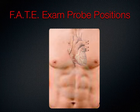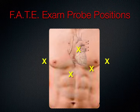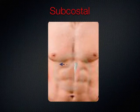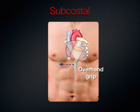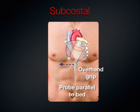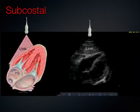The probe positions include the sub-xiphoid location, the apex of the heart, over the great vessels, and the pleura bilaterally. For the subcostal view, the indicator is aimed at the patient's right and we use the liver as a window to look up and see the four-chambered view. Use an overhand grip with the cable exiting the bottom of your hand, pressing the probe nearly parallel to the bed.